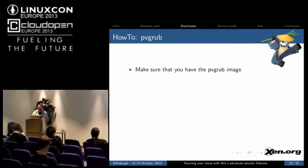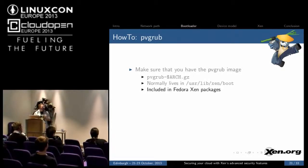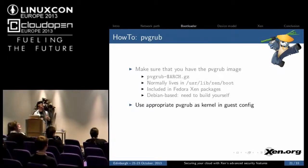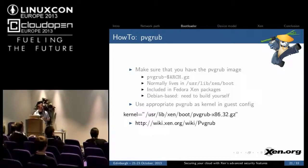PVGrub is really simple to set up. The main thing is to make sure you have the PVGrub image, called pvgrub-arch — either x86_32 or x86_64. It's included in the Fedora Xen packages, but unfortunately it's not included in Debian-based Xen packages including downstream Ubuntu, so you'll have to build the image yourself. Once you have the image, you put it in the right place and use it as the kernel in the guest config. When you start the VM, it'll load up PVGrub, which will then kexec the kernel you choose from the menu. There's a wiki page with links to more information.